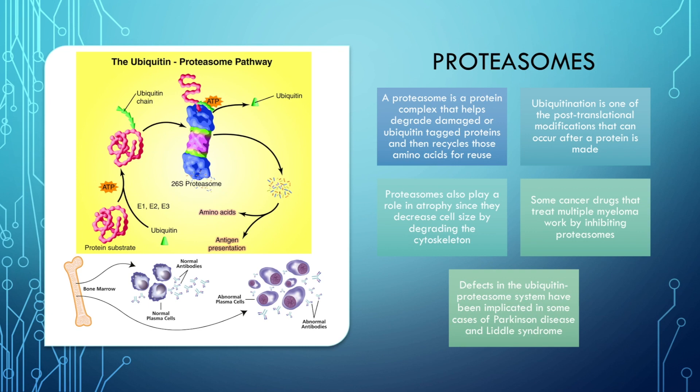Now let's talk about what happens when there are issues with proteasomes. Defects in the ubiquitin-proteasome system have been implicated in some cases of Parkinson's disease. Another disease is Liddle syndrome, a gain-of-function mutation in which there is increased activity of the sodium channel in the kidneys, causing hypertension, metabolic alkalosis, and hypokalemia. In this disease, there is a mutation in the sodium channel protein so it is not degraded by the proteasome system.